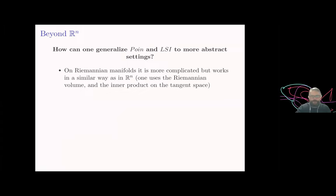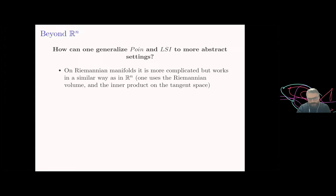First, let's speak about Riemannian manifolds. It gets more involved because you need to master the differential geometry language first — I'm not the person to discuss this in detail. But once you have all the setting prepared, it works in a similar way. Instead of the Lebesgue measure you need the Riemannian volume, instead of the Euclidean norm of the gradient you use the scalar product from the Riemannian structure. The geometry — especially the Ricci curvature — comes into the picture, but I'm not going to speak about it. You can find it in the book by Bakry, Émery and Ledoux.